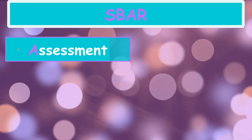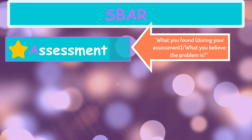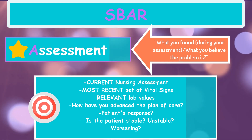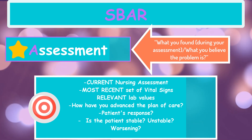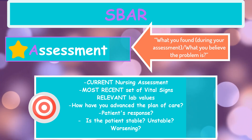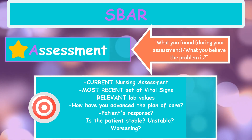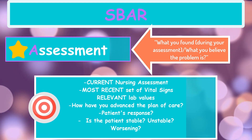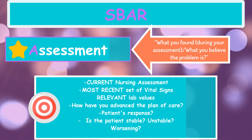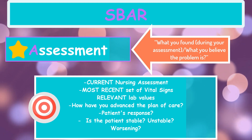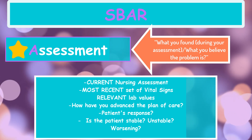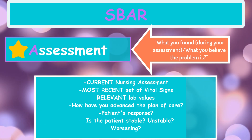A in SBAR is for assessment. Here we talk about what we found during our nursing assessment of our patients and what we believe to be the problem. Include a current assessment, current vital signs and labs, what happened during your shift when caring for this patient, and how you advanced the plan of care. State the patient's response and give your professional conclusion — is the patient stable, unstable, or worsening in their condition?